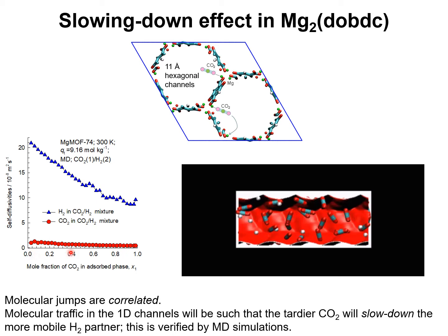We note that with increased concentration of CO2 in the adsorbed phase, the hydrogen self-diffusivity decreases by a factor of 2. This slowing down effect is very commonly observed in mixtures of strongly adsorbing components and weakly adsorbing components within structures that are not strongly confined.